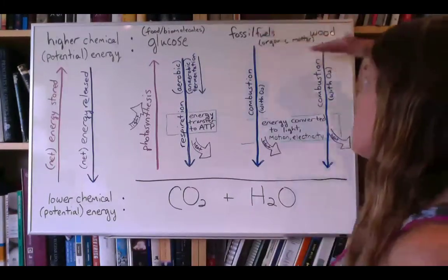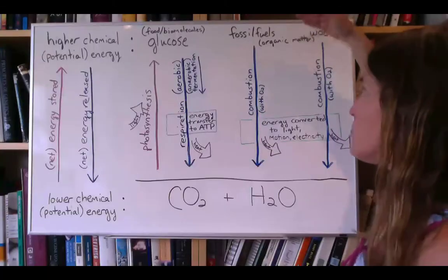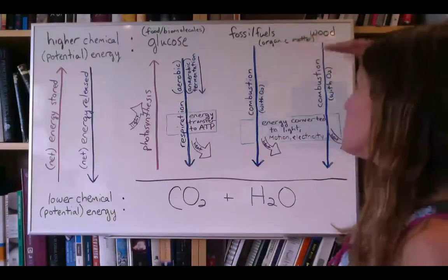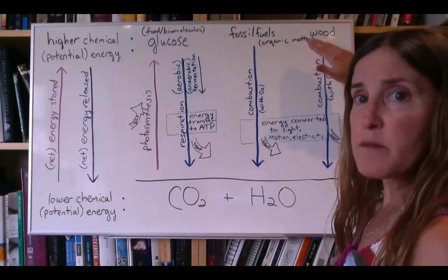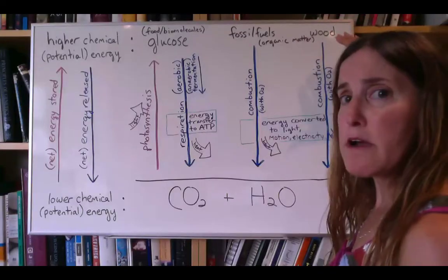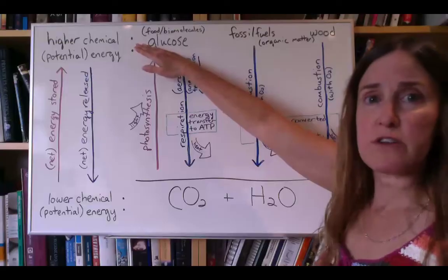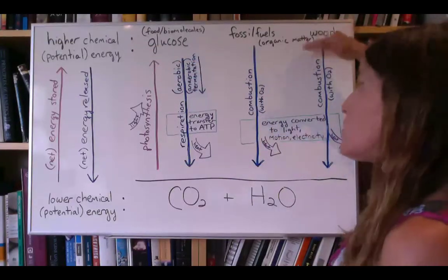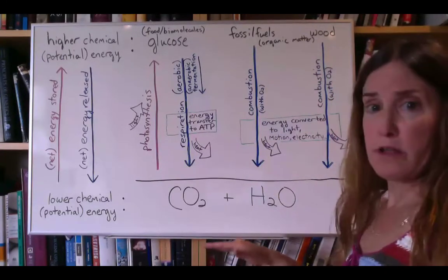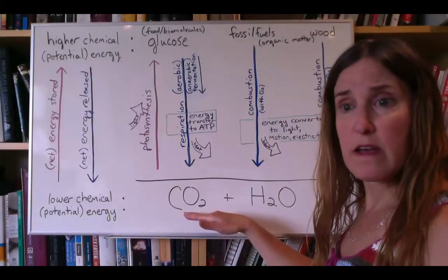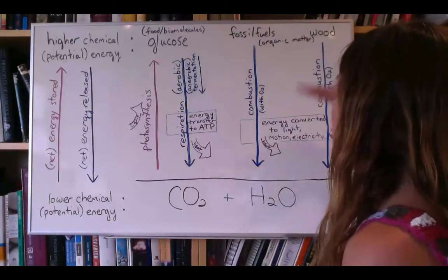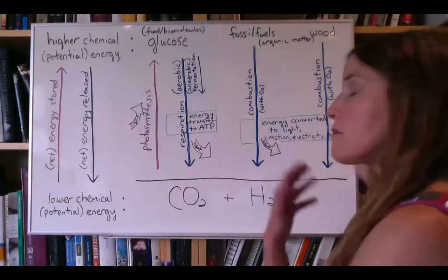If we want to use the energy that's in fossil fuels—oil, coal, natural gas—and wood, a type of biomass, these substances are originally organic matter, meaning they came from molecules that were in living things in the past. These molecules are large carbon compounds with a high level of chemical potential energy. When the molecules are broken apart, they result in smaller, simpler carbon molecules, primarily carbon dioxide, which has a much lower chemical potential energy. As the molecules are broken down, much of the energy that was in these original molecules is released.